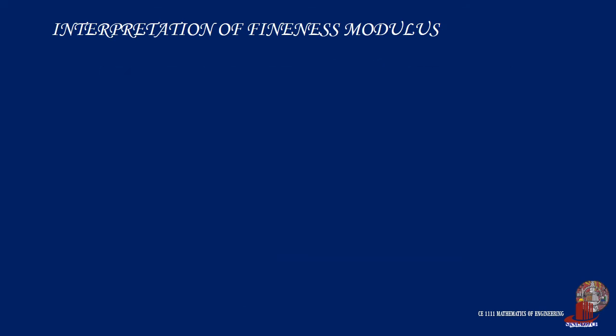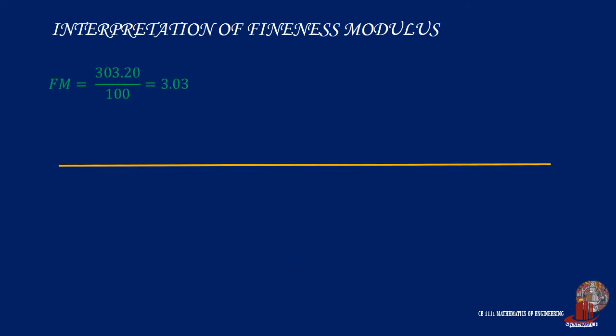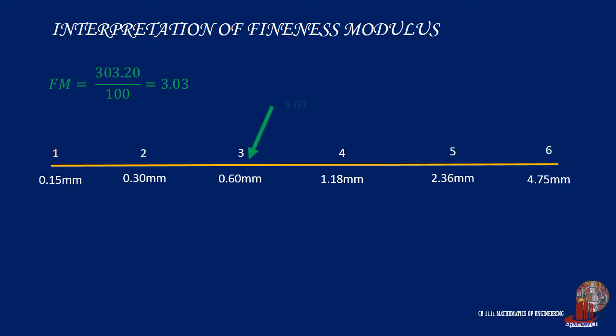But what does 3.03 mean? Writing down the test sieve sizes from the smallest to the largest and placing their order, we can see that 3.03 lies between the third and the fourth sizes, reflecting that the average particle size range of the sample is between 0.6 mm and 1.18 mm.